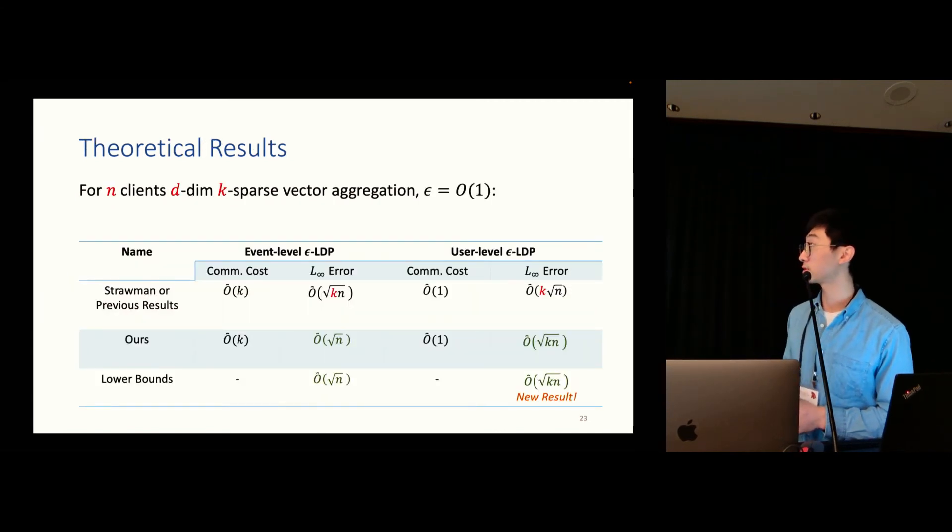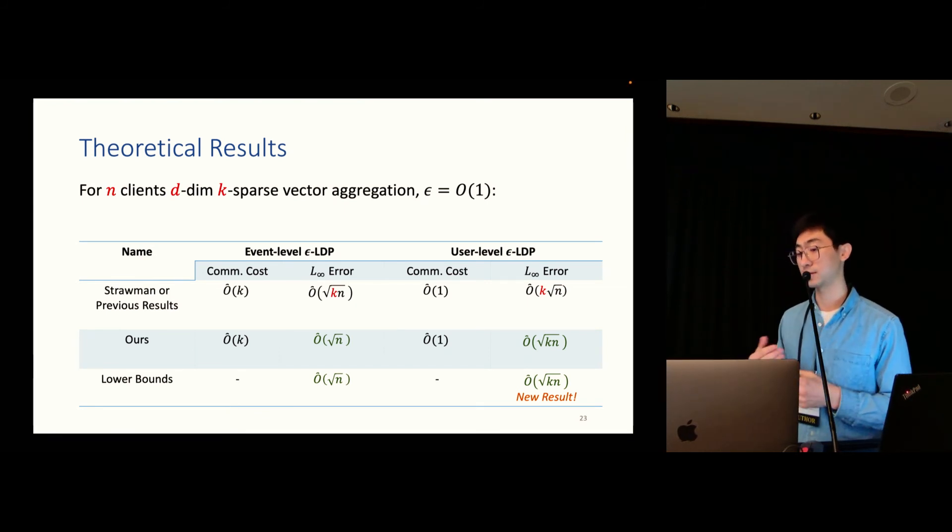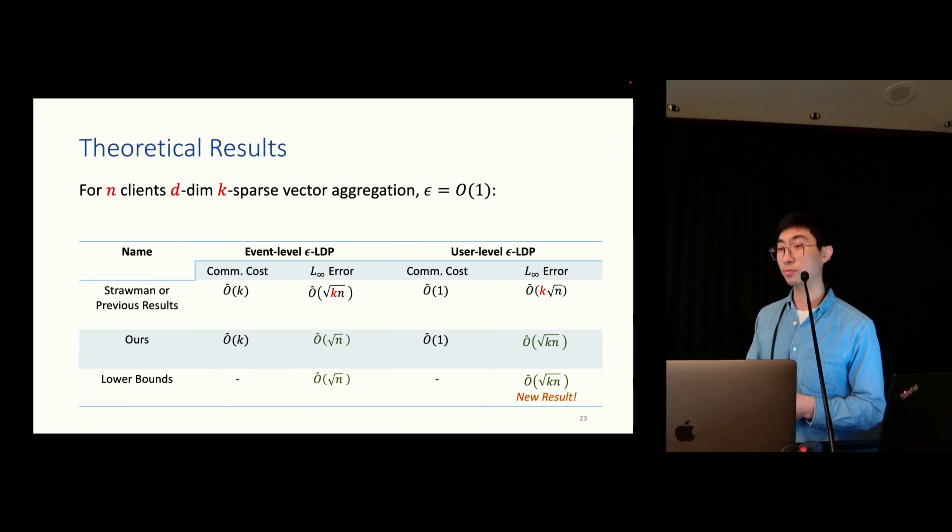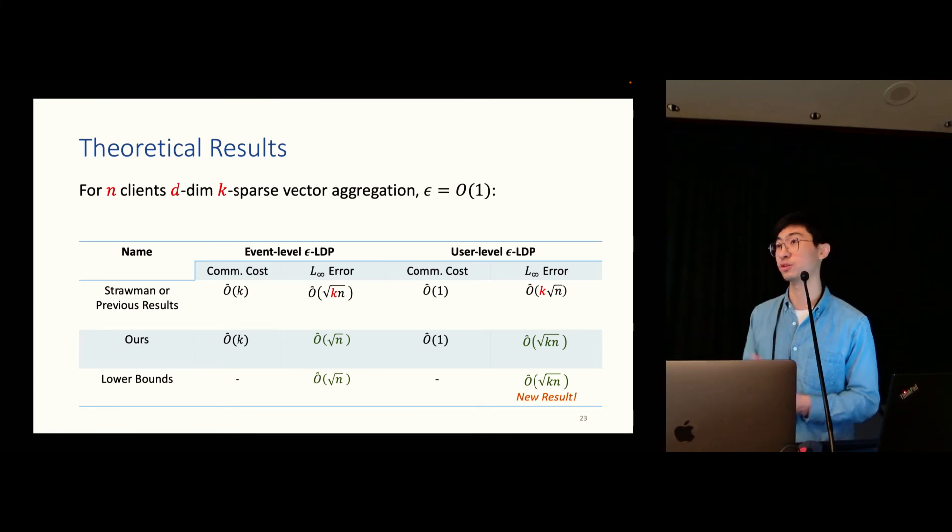And here's our final theoretical result. For n clients, d-dimensional k-sparse vector aggregation, and we assume the epsilon is a constant. Then in both the event level case and the user level case, our scheme will have roughly the same communication cost as a previous result. And our scheme will have squared k times error, smaller error compared to previous results. And our scheme actually has the optimal error. Here are two lower bounds. The lower bounds for event level LDP is an old result, and the user level LDP part is a new result in our paper. So the proof for the lower bound is more technical, so I'm going to skip here. For those who are interested, please take a look.